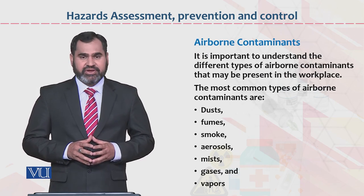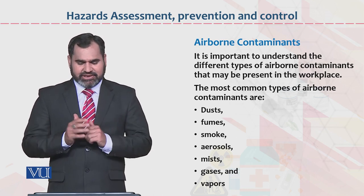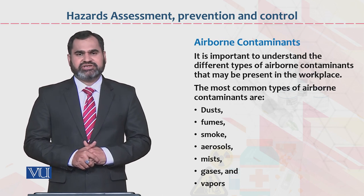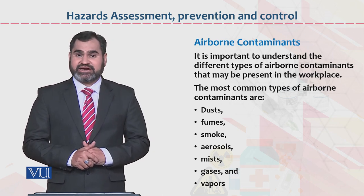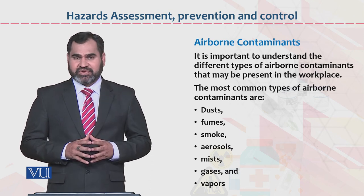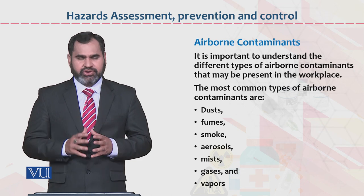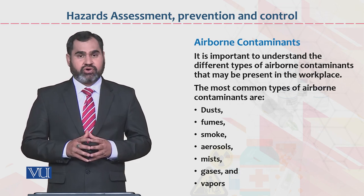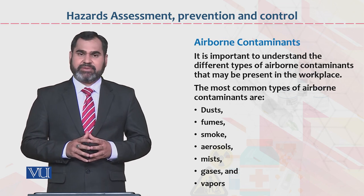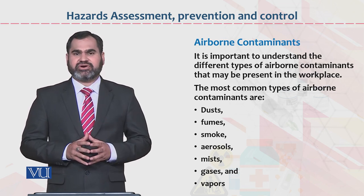Airborne contaminants — yeh wo ajza hain jo ke airborne hazards mein mojood rahate hain, jinko jana, samajhna, understand kerna bhoat important hai. Wo yeh hain: Number one, dusts or particles of dusts. Number two, fumes. Three, smoke. Then aerosols, mists, gases, and vapors. Yeh jitne bhi hain, yeh airborne contaminants hain.